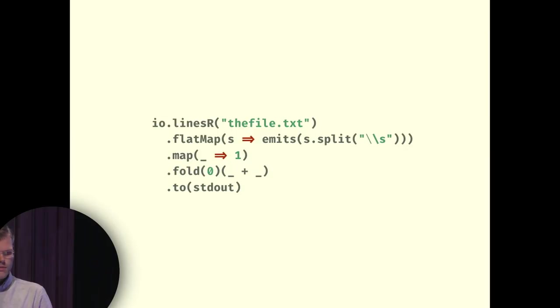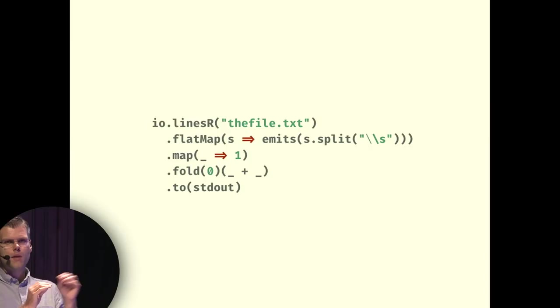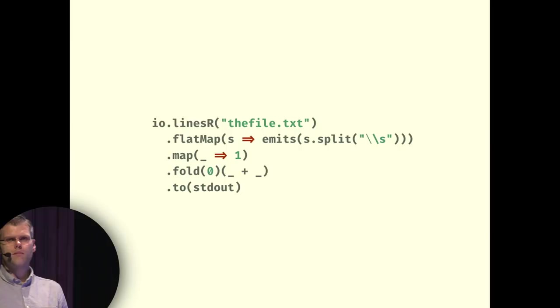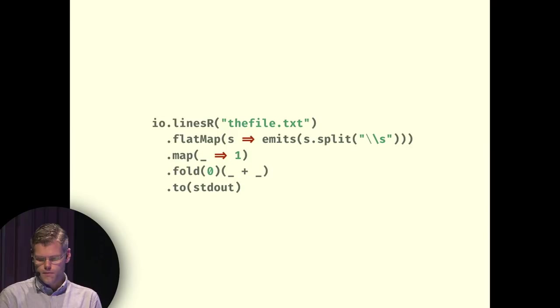We can also reuse this in a larger system — if we want to reuse this program, it's perfectly meaningful to compose other things with it. I also want to point out that it's easy to verify. Not only is the logic very prominent and easy to see at a glance, but the correctness of this program is composed of the correctness of the parts. As long as the individual parts are correctly written, put in the right order, the types line up, and there's no bug in FS2, this whole program is going to be correct. Compositional reasoning about correctness becomes very important when we start talking about large systems.